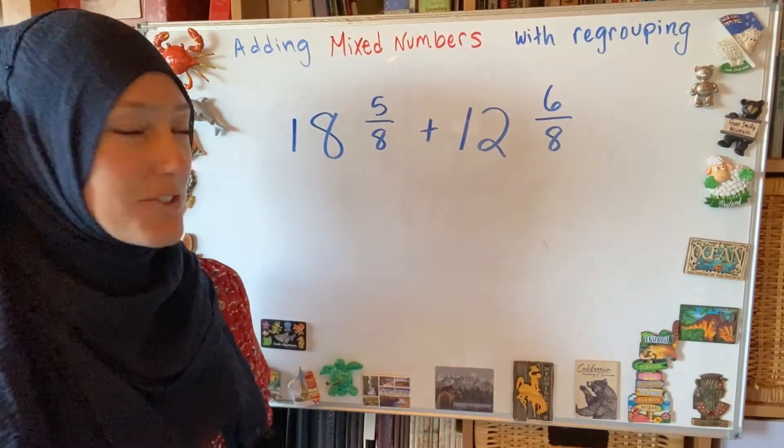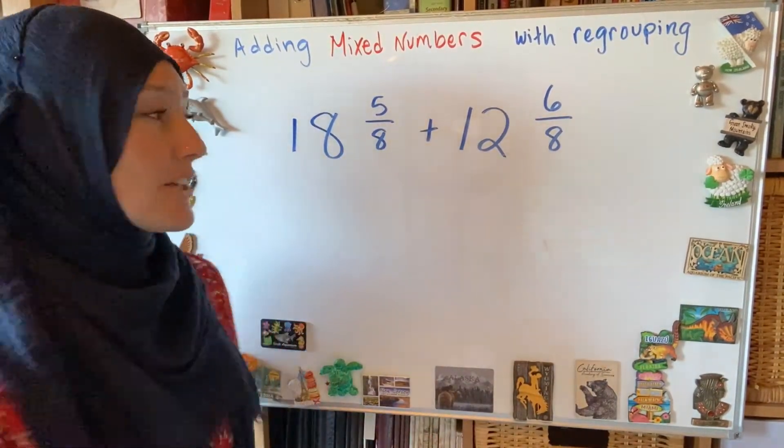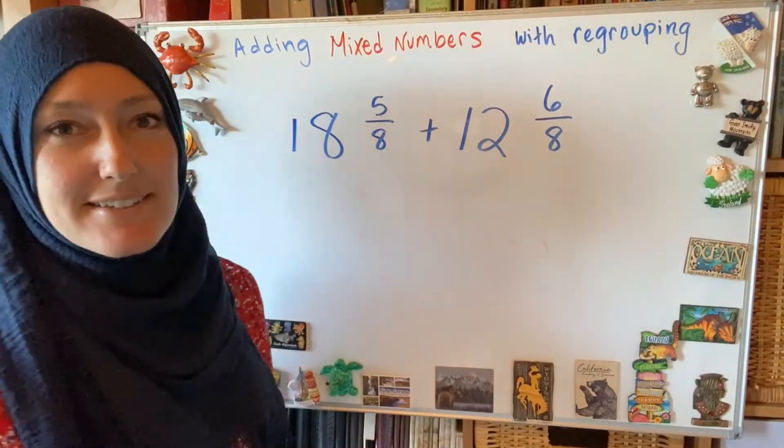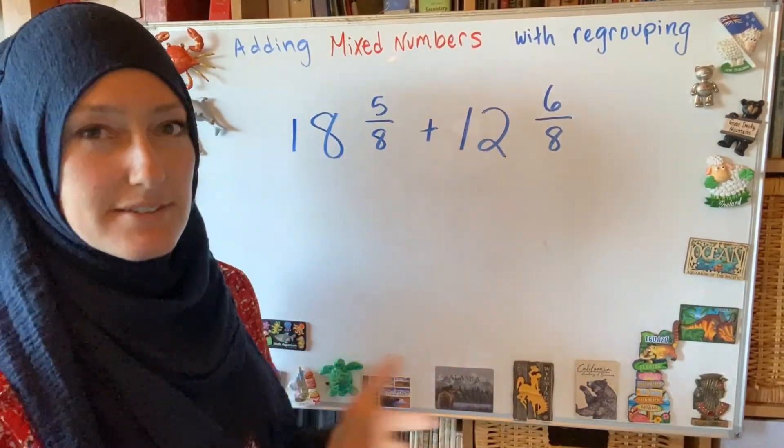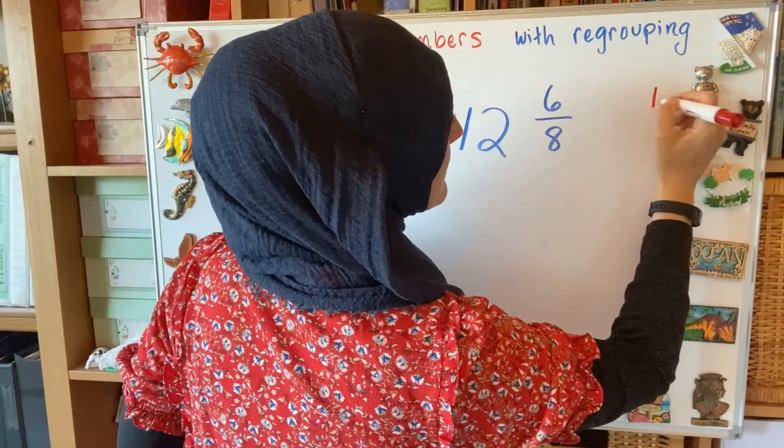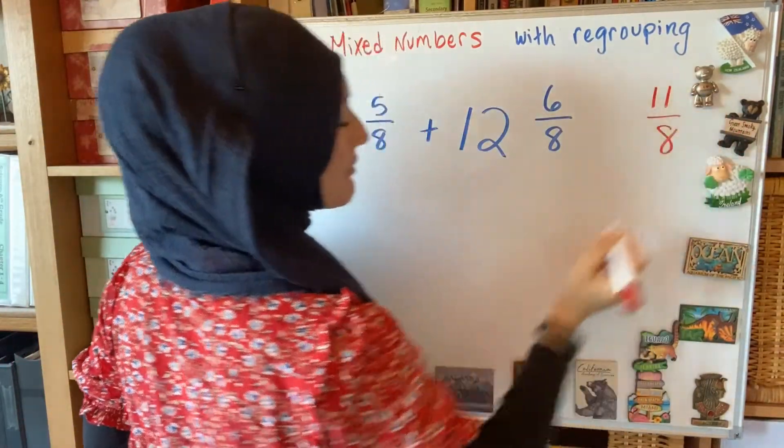So write it down first and try it. The beginning part is just regular fraction addition. So I look at my fraction part first, 5 eighths and 6 eighths. How many eighths sized pieces will that be? 5 plus 6 will be 11 eighths for my fraction.